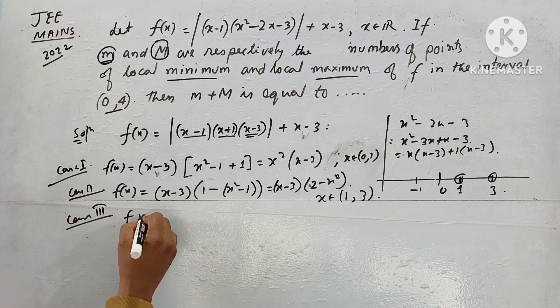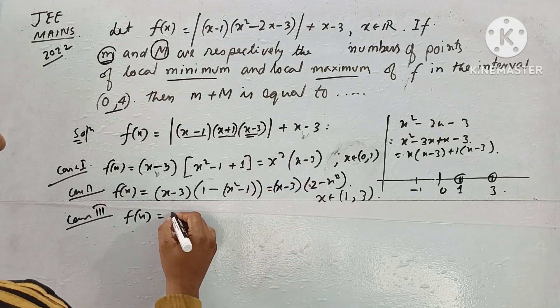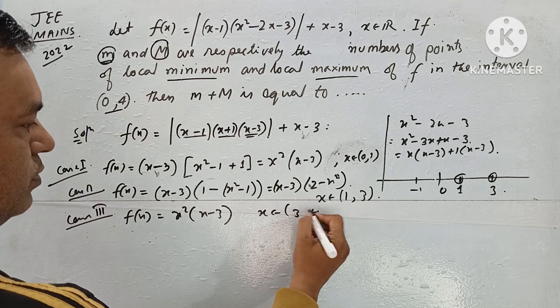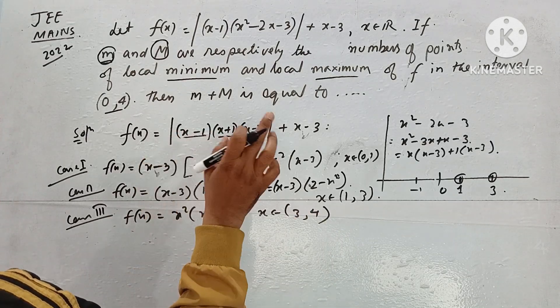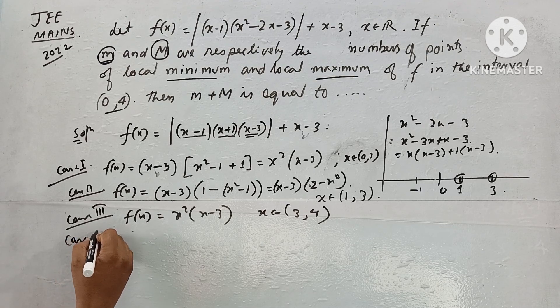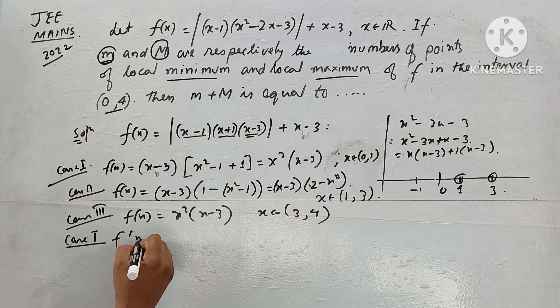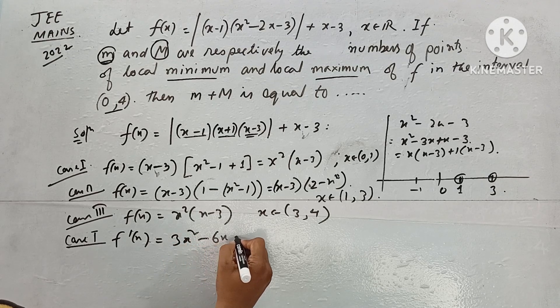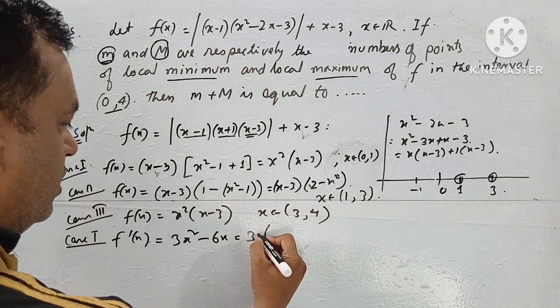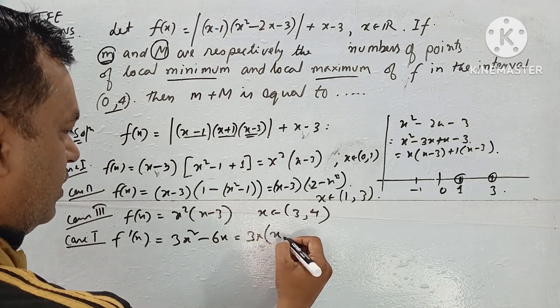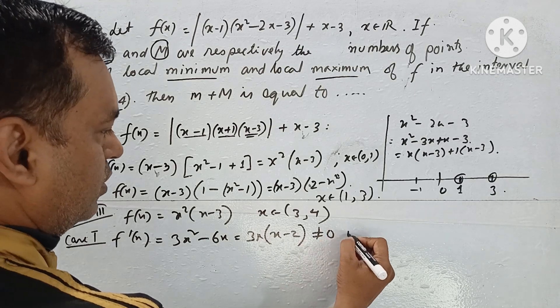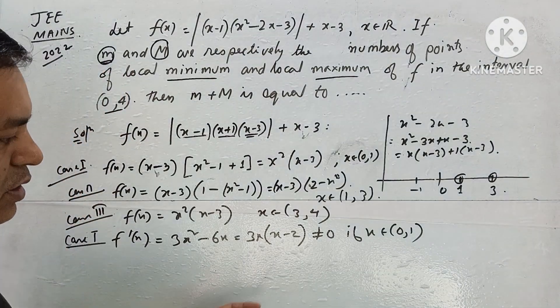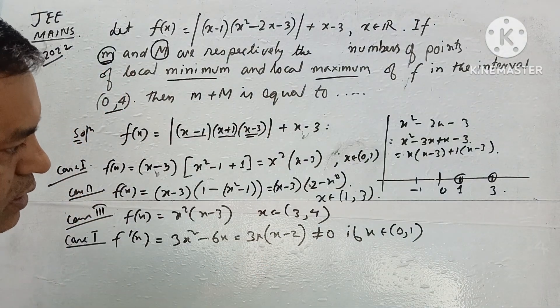Then Case 3: In Case 3, f(x) is the same as Case 1 when x belongs to (3,4), because when greater than 3 all are positive. So in Case 1, f'(x) is 3x² - 6x, which equals 3x(x-2). This is not equal to 0 if x belongs to (0,1), because 0 is not included, so this factor cannot be zero.